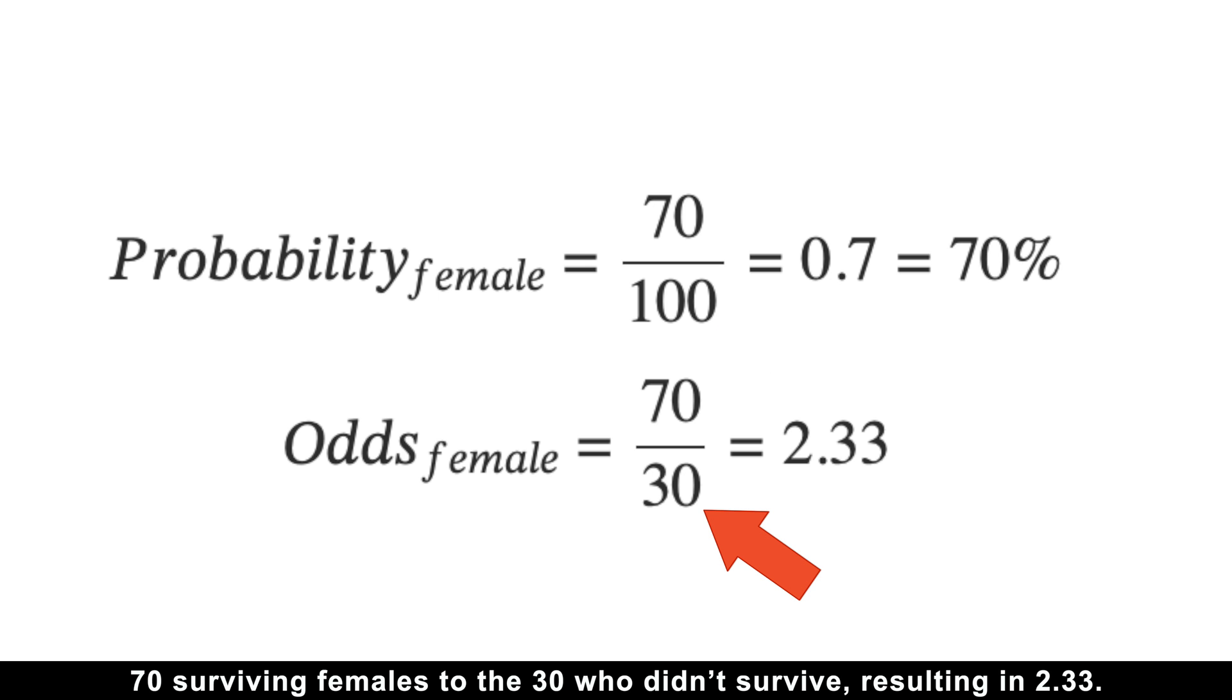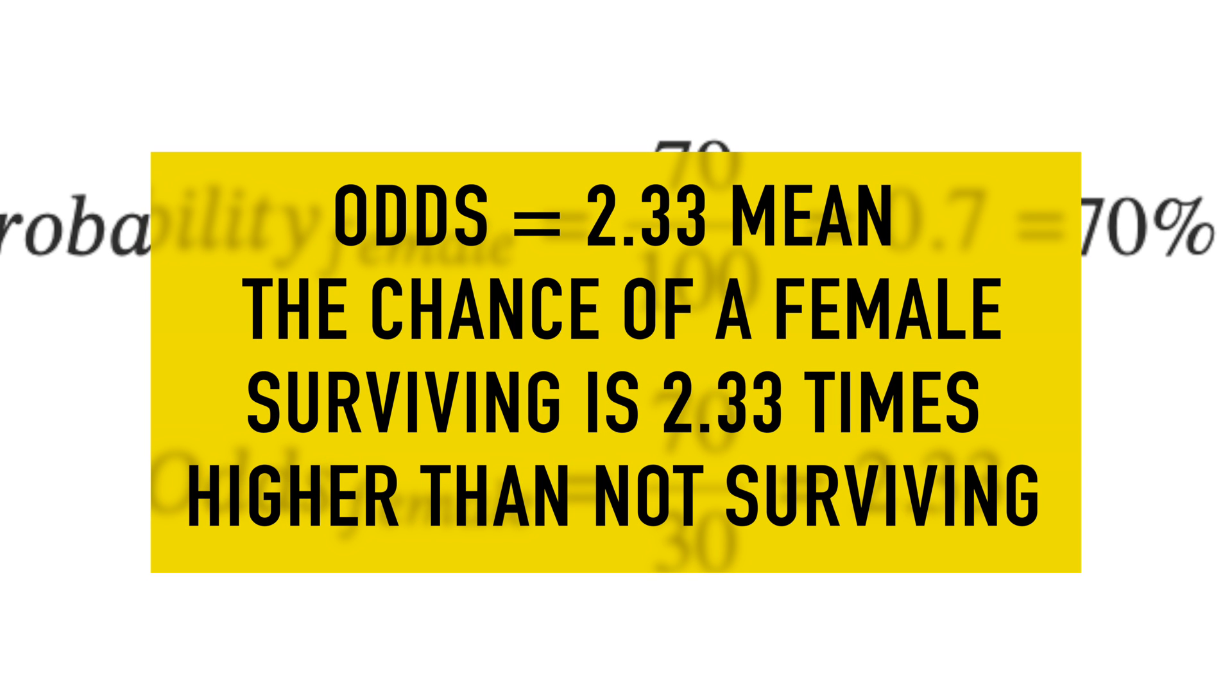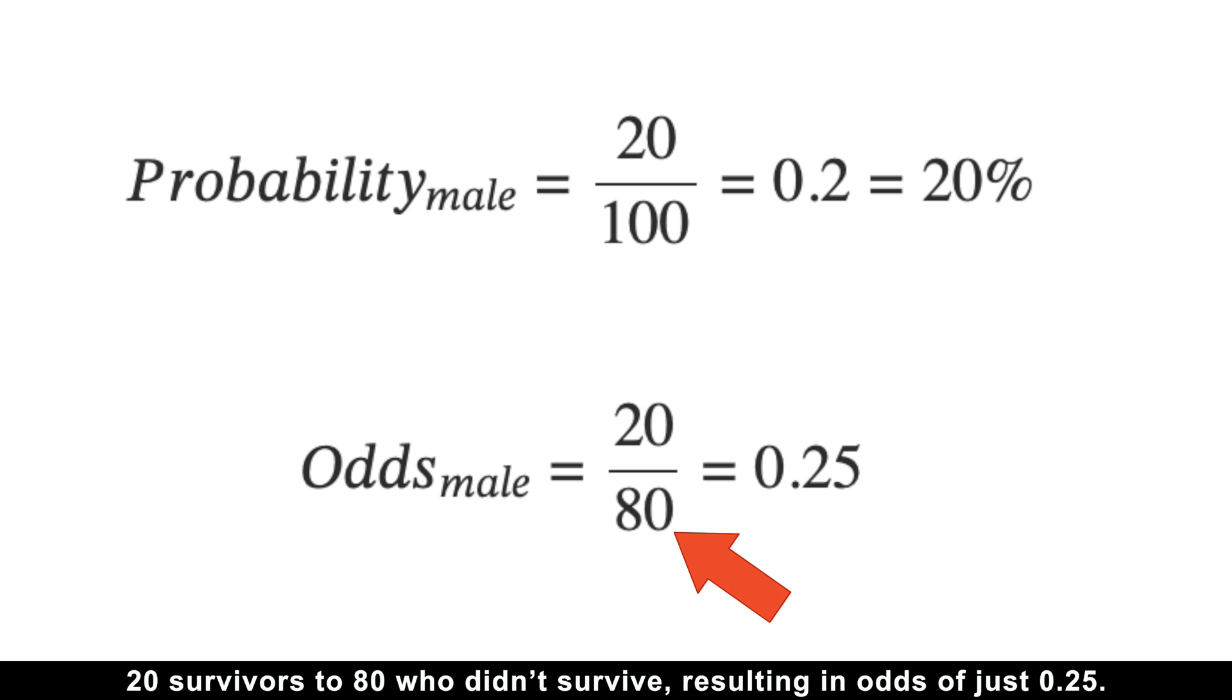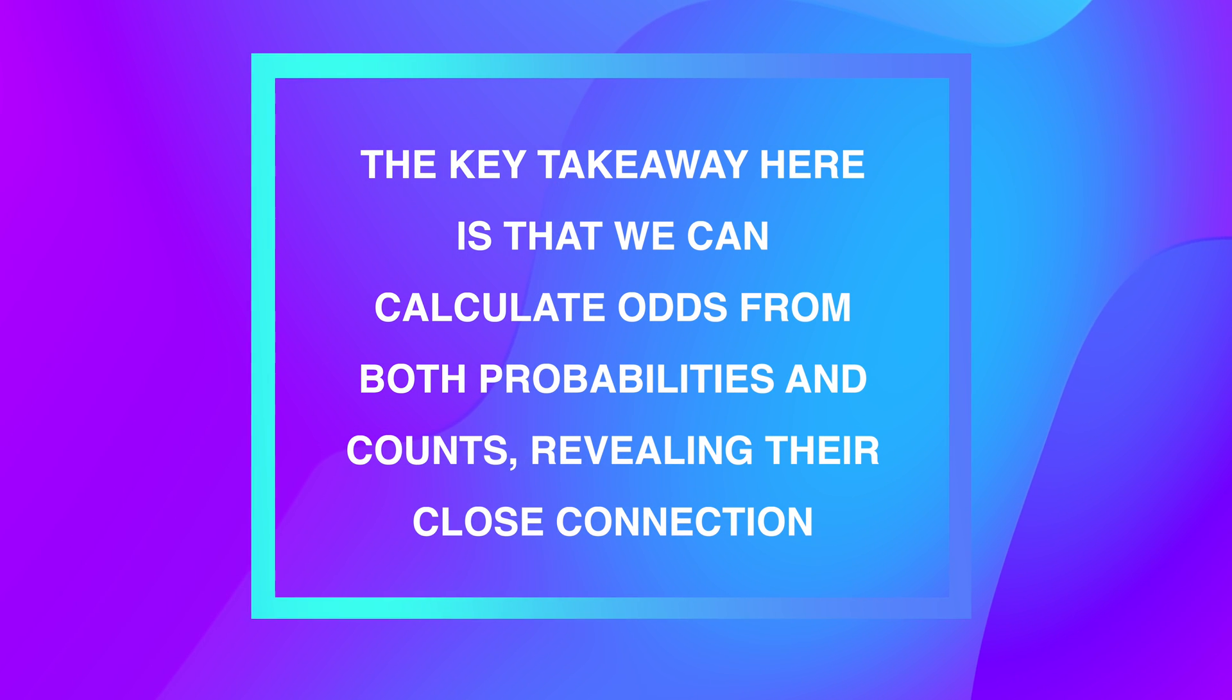For instance, the odds of female survival are the ratio of 70 surviving females to the 30 who didn't survive, resulting in 2.33. This means the chance of a female surviving is 2.33 times higher than not surviving. In contrast, the odds for males are the ratio of 20 survivors to 80 who didn't survive, resulting in odds of just 0.25.